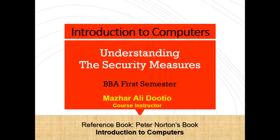Computer data security is a process of protecting files, databases, and accounts on the network by adopting a set of controls, applications, and techniques that identify the relative importance of different data sets, their sensitivity, regulatory compliance requirements, and then applying appropriate protections to secure those resources. The core elements of data security are confidentiality, integrity, and availability.